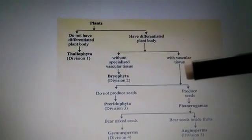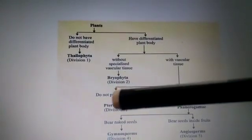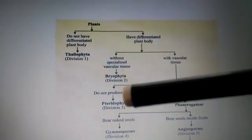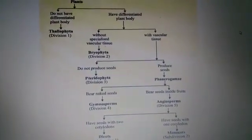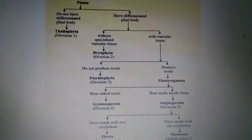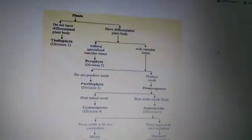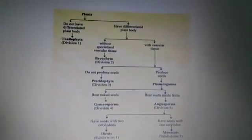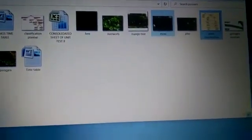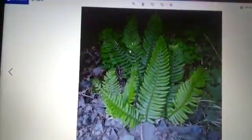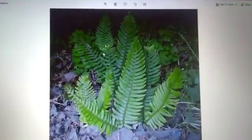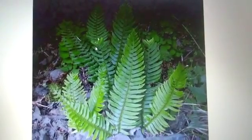Second point: vascular tissues are present. Third point: they do not produce seeds. And all these Pteridophytes grow in warm and shady places. The example of Pteridophytes is Fern. You might have seen Ferns growing near your home — these types of structures are Ferns.